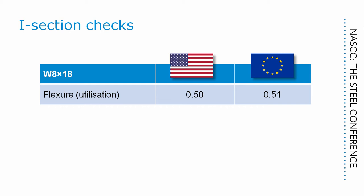In shear, the W8 by 18 floor beams are governed by plastic resistance, with the Eurocode giving the larger resistance after a more exhaustive — or perhaps exhausting — calculation to determine a larger shear area.